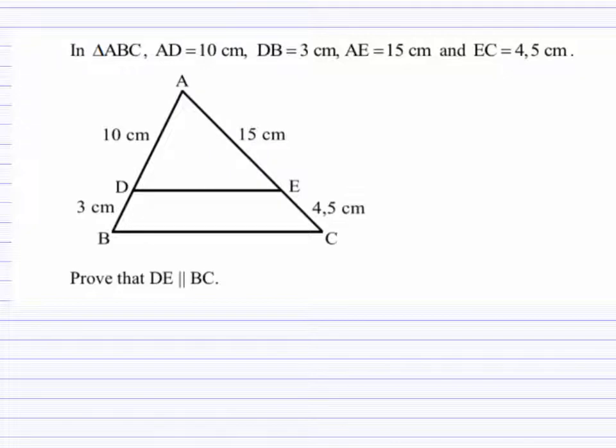Looking at the question we have before us, it says in triangle ABC, AD is 10 cm, DB is 3 cm, AE is 15 cm, and EC is 4.5 cm. We are required to prove that DE is parallel to BC.